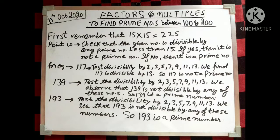For example, if we take 117 and test divisibility by 2, 3, 5, 7, 9, 11, and 13, we find that 117 is divisible by 13, because 13 × 9 = 117. That means 117 is not a prime number.